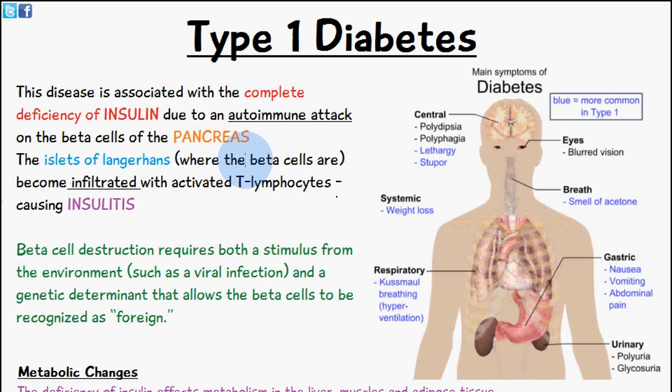The islets of Langerhans, which are where the beta cells are, are going to become infiltrated with activated T lymphocytes, and this is going to cause insulitis. Eventually we will have complete beta cell destruction, and therefore insulin won't be produced. The reason we have this beta cell destruction is both from an environmental stimulus like a viral infection, and also a genetic determinant that allows beta cells to be recognized as foreign by the human body, so the body causes an autoimmune attack on the beta cells.